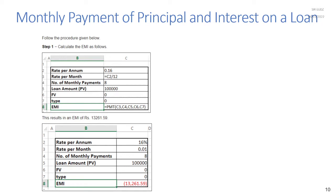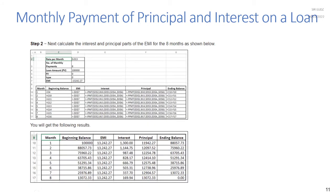To calculate: the rate per annum is 16% divided by 12 for the monthly rate. Number of monthly payments is 8, loan amount is 1 million, FV is zero, type is zero. EMI using PMT is the interest rate C3, number of payments C4, loan amount C5, future value C6, and type C7. This gives an EMI of approximately 13,261.59.